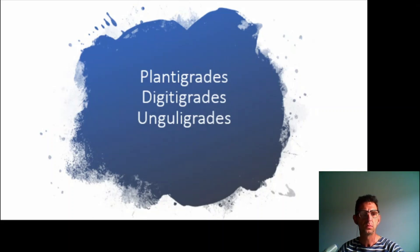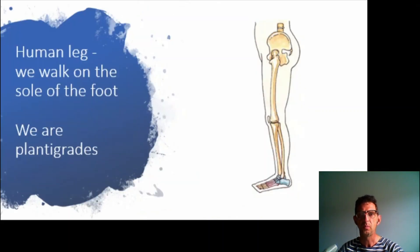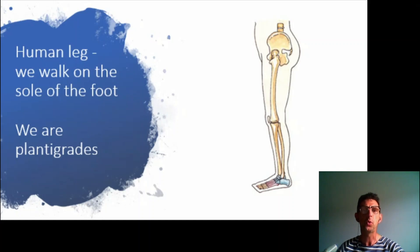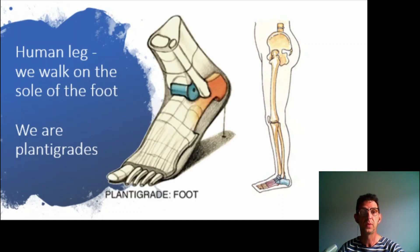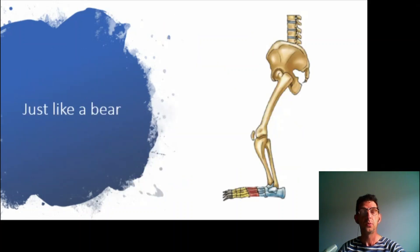Now, you might think — what are those, what is this all about? Well, if we look at a human leg, we can say we walk on the sole of the foot. We call ourselves plantigrades. We plant down the complete foot. So we have a plantigrade foot, just like a bear.